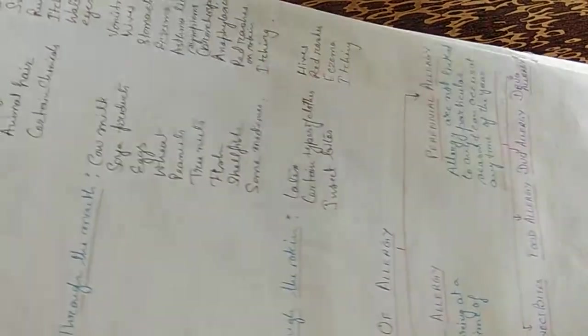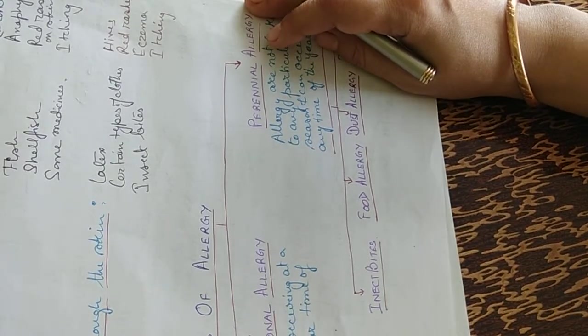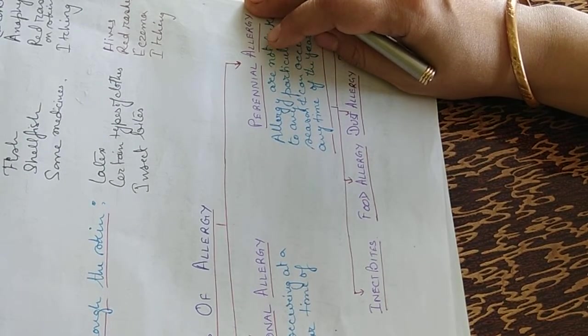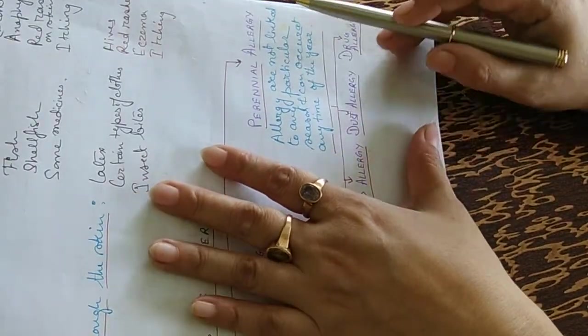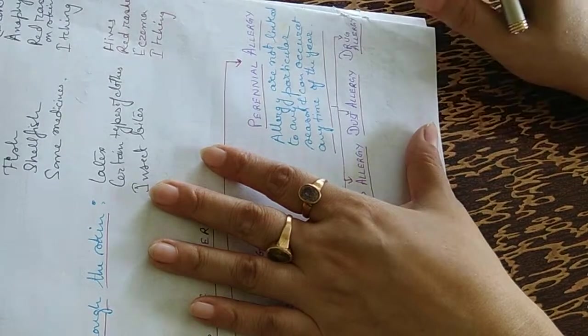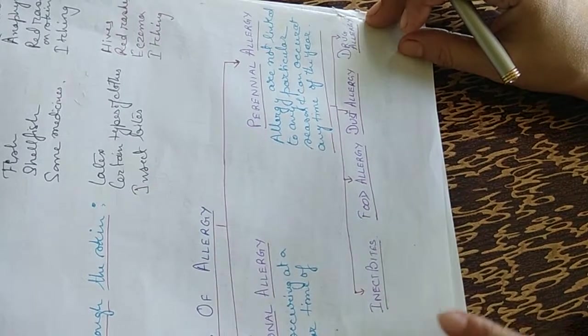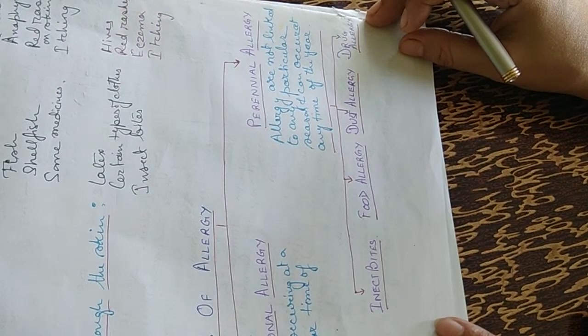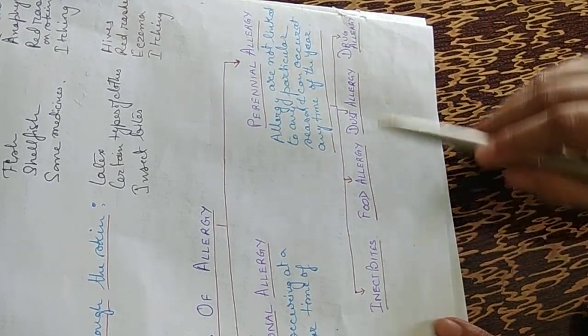There are mainly two types of allergies: seasonal allergy and perennial allergy. Seasonal allergy occurs during a particular season. Perennial allergies are not linked to any particular season. They can occur any time of the year. Insect bites, food allergy, dust allergy and drug allergy are all perennial allergies.